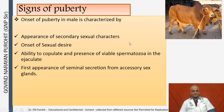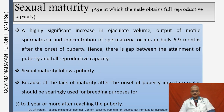The signs of puberty include: onset of puberty in males characterized by appearance of secondary sexual characters such as development of a heavy hump, onset of the ability to copulate, presence of viable spermatozoa in the ejaculate, and first appearance of seminal secretion from accessory sex glands.